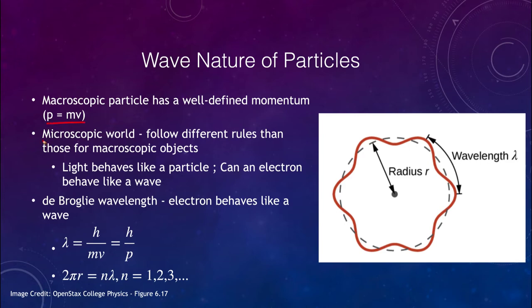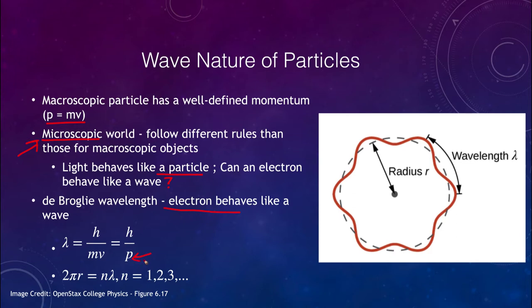However, the microscopic world is different. The rules are different, and we remember that light behaves like a particle. The question is: can an electron behave like a wave? We can determine its wavelength — the electron does behave like a wave, and that wavelength is given by h, Planck's constant, divided by the mass times the velocity: h over mv, which is h over p, the momentum.